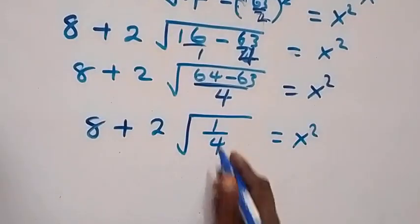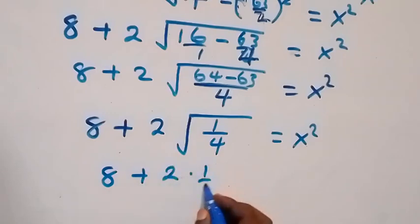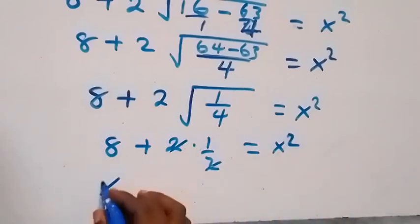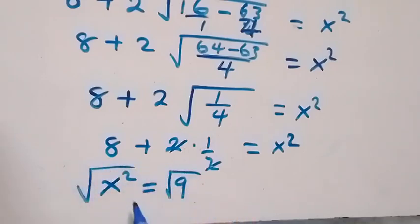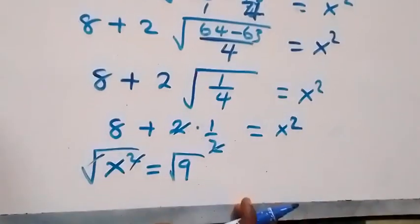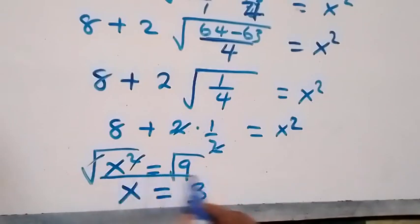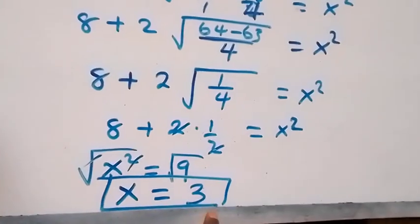The square root of 1 is 1 and the square root of 4 is 2, so we have 8 plus 2 times 1 over 2 equals x squared. The 2 cancels, leaving 8 plus 1, which is 9. So x squared equals 9. Taking the square root on both sides, we are interested in the positive value, so x equals 3. The value of this expression is simply 3.